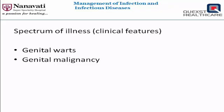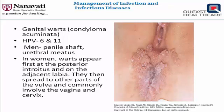The clinical spectrum of this disease is mainly two: genital warts and genital malignancy. Genital warts, or condyloma acuminata, are usually caused by HPV types 6 and 11. In men, they are seen on the penile shaft and the urethral meatus. In women, they usually appear first at the posterior introitus and on the adjacent labia, then spread to the vulva, vagina, and cervix — so the external parts are affected first.